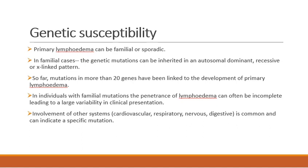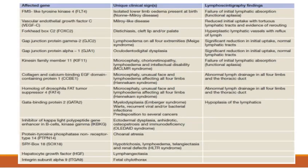There can be involvement of other systems including cardiovascular, respiratory, nervous, and digestive. Different affected genes lead to unique clinical signs and lymphoscintigraphic findings. For example, FMS-like tyrosine kinase gene leads to non-Milroy disease and isolated lower limb lymphedema present at birth, with scintigraphic findings showing failure of initial lymphatic absorption. Vascular endothelial growth factor C leads to Milroy-like disease. Gap junction protein gamma 2 and gap junction protein alpha 1 are also implicated with unique clinical and lymphoscintigraphic findings.